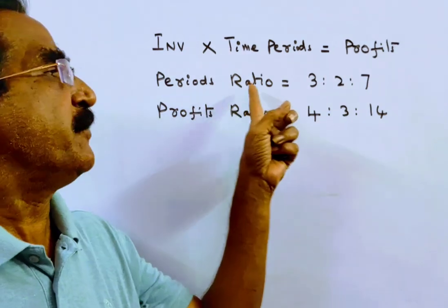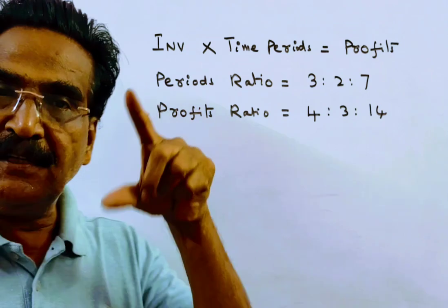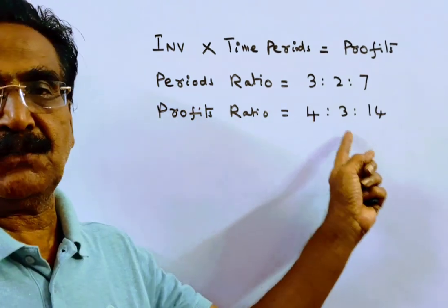See friends, the periods ratio is given, that is 3 is to 2 is to 7, and the profits ratio is given, that is 4 is to 3 is to 14.